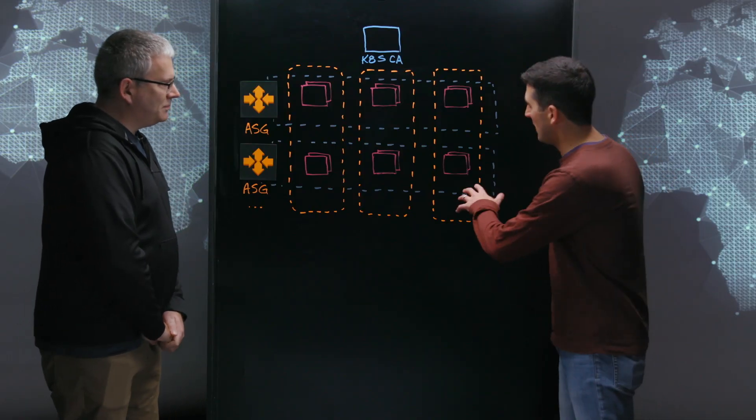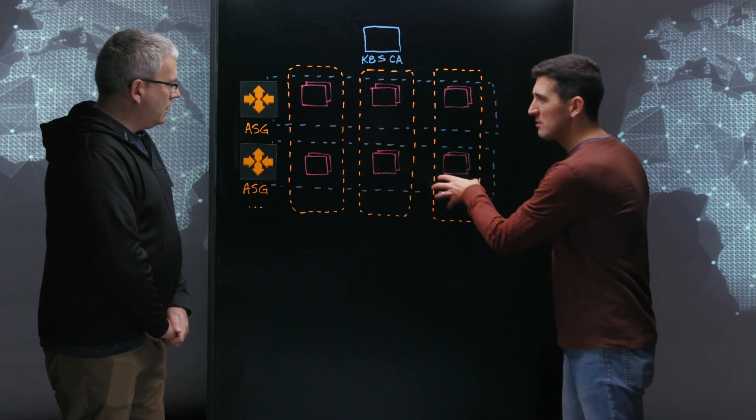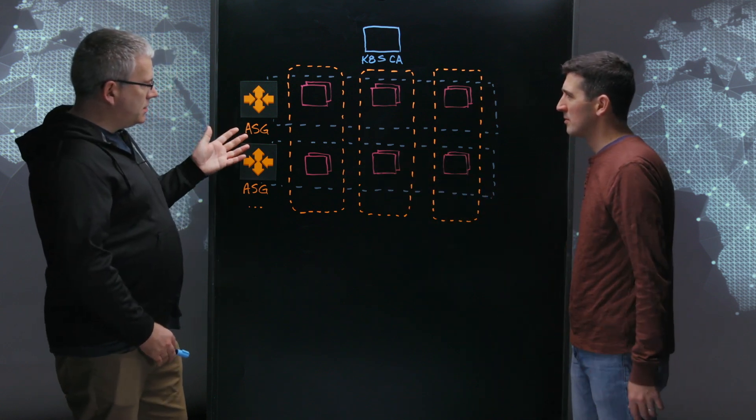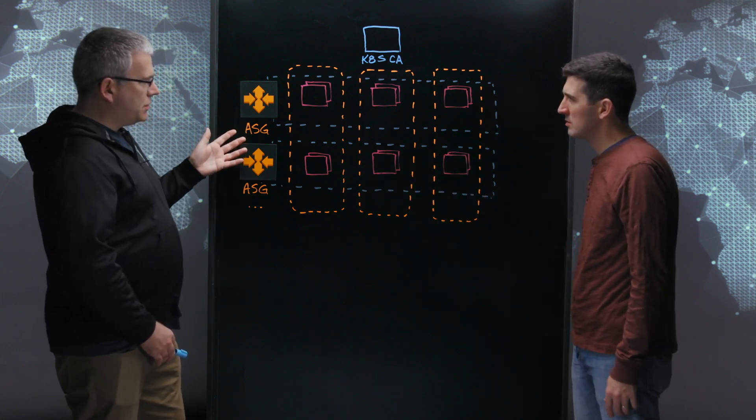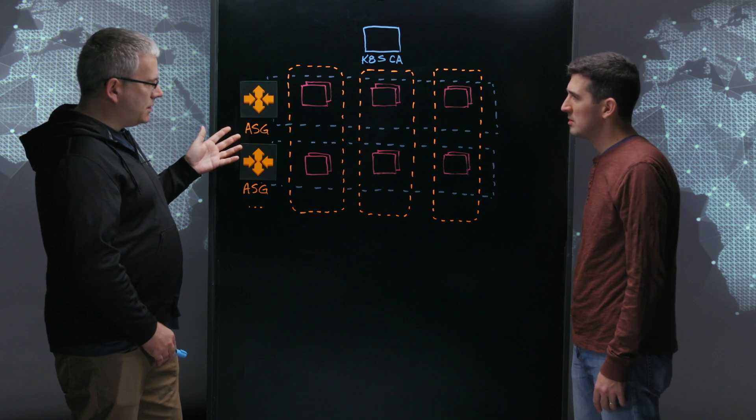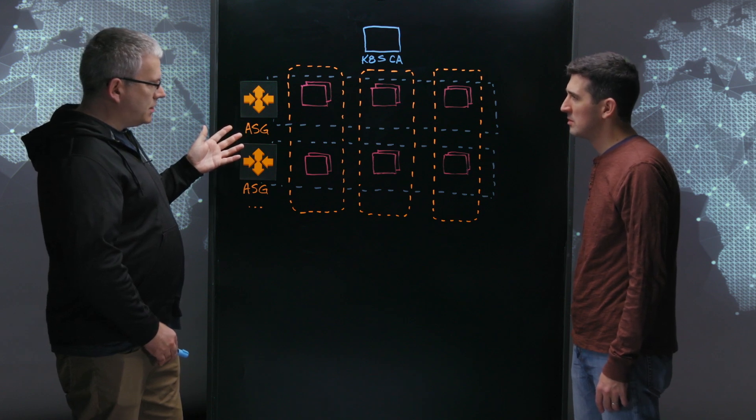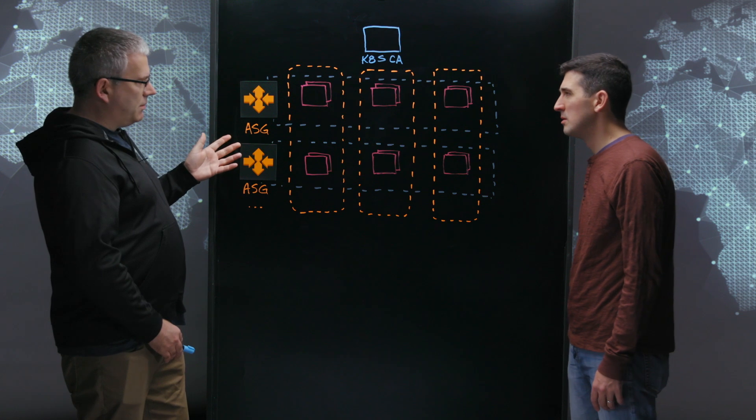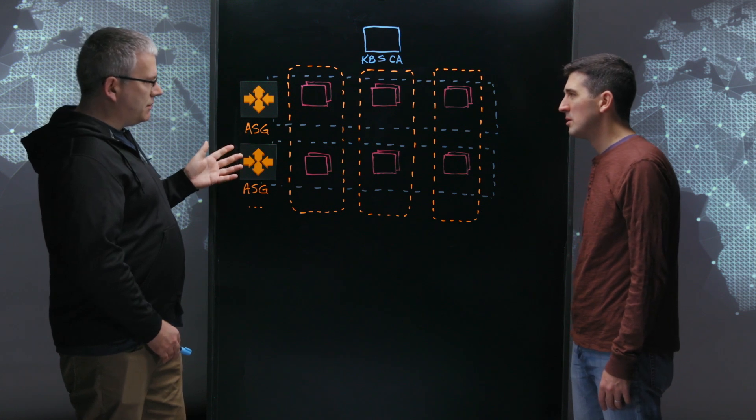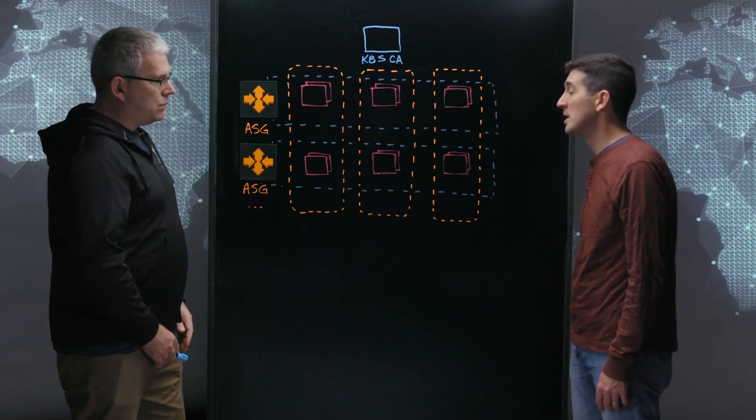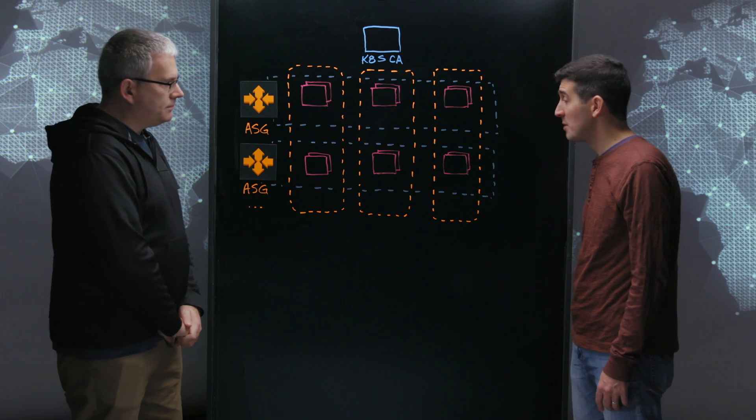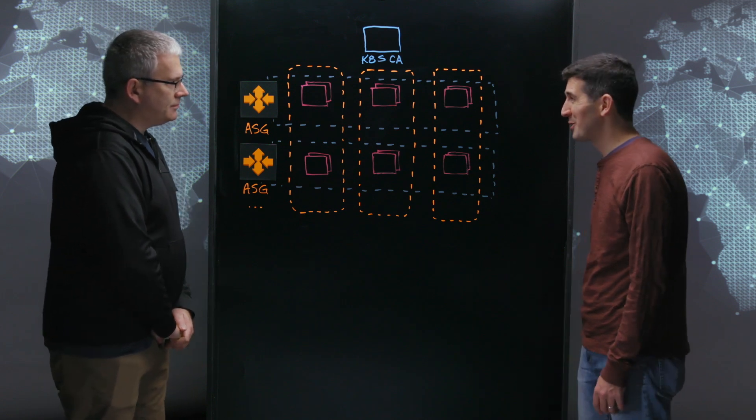And I see here you have these representing availability zones. What this represents is the underlying infrastructure for a typical Kubernetes cluster at Skyscanner. And what makes our infrastructure slightly different is the fact we're running on spot. Spot instances. 100% on spot. 100% spot. That's going to be interesting for a lot of people.